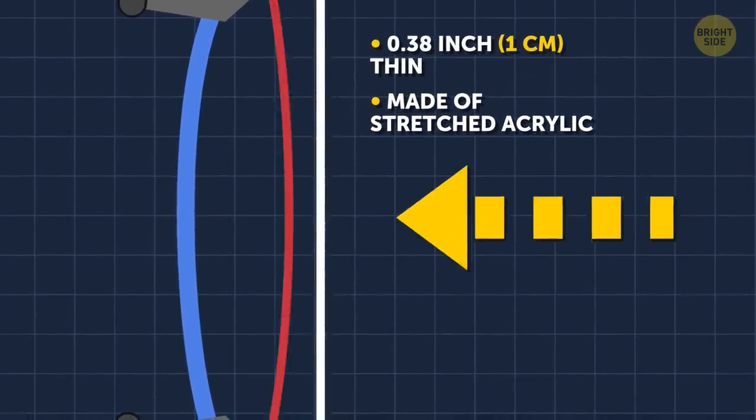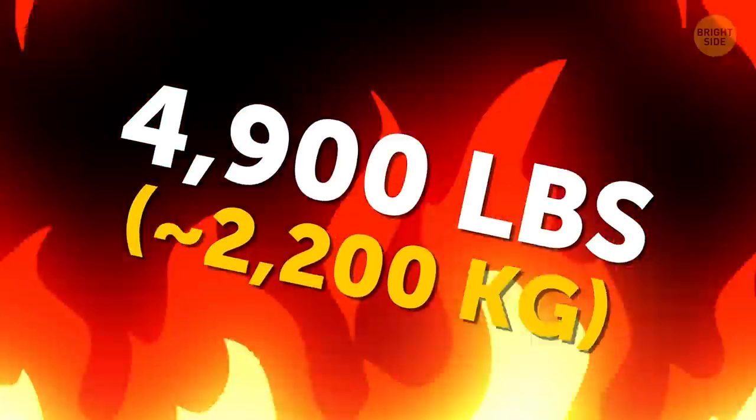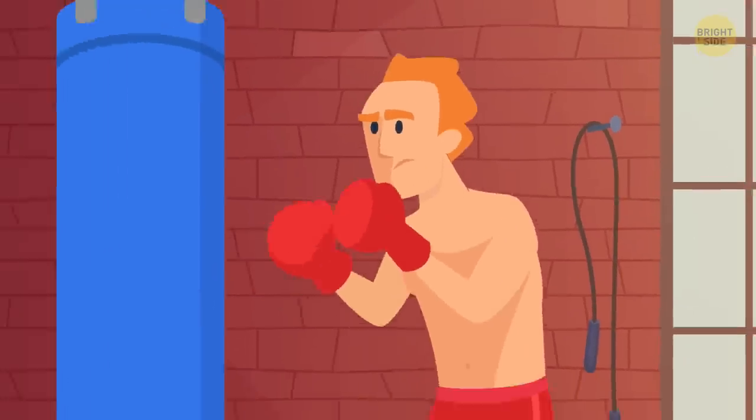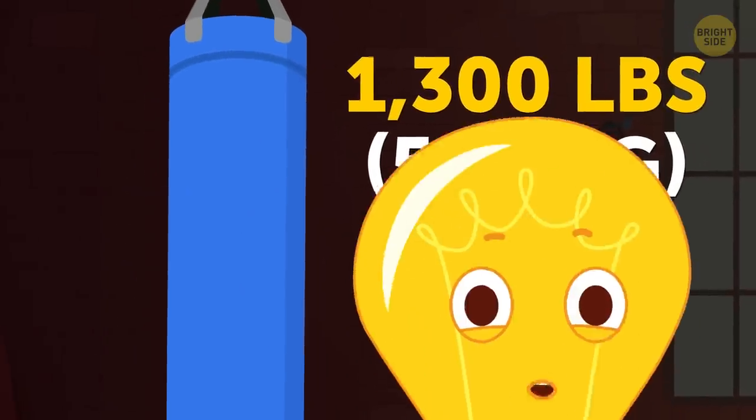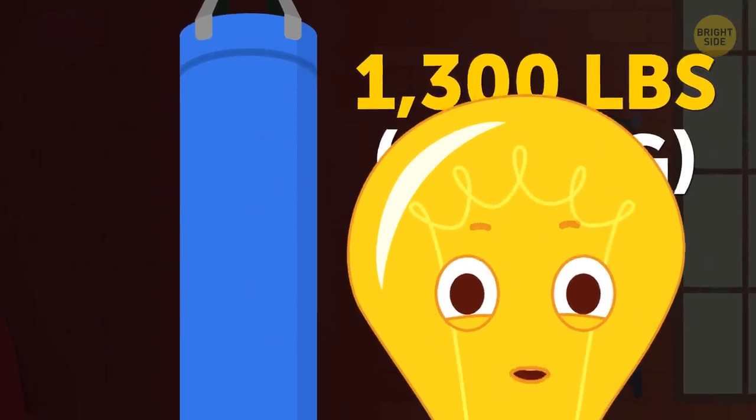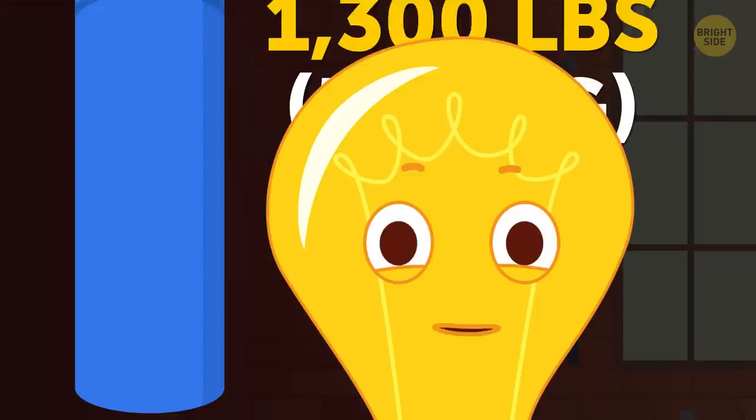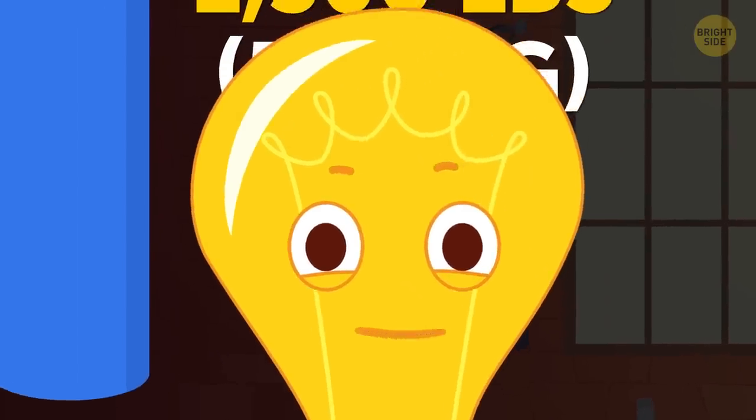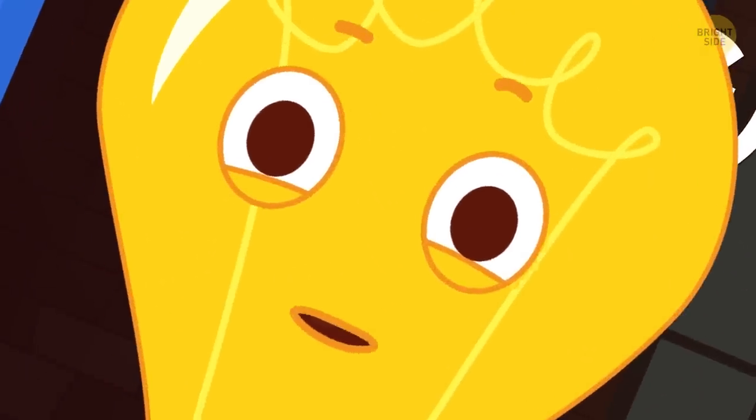Long story short, it can withstand the pressure of about 5,000 pounds. A professional boxer packs a punch of up to 1,300 pounds, so even a tough guy like that wouldn't be able to damage an airplane window. And certainly not the average Joe. The window would win every single time.